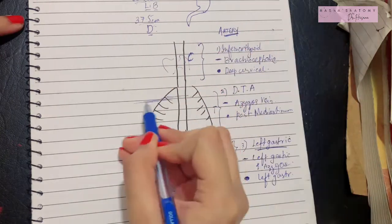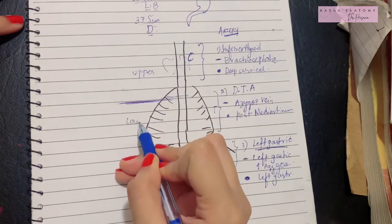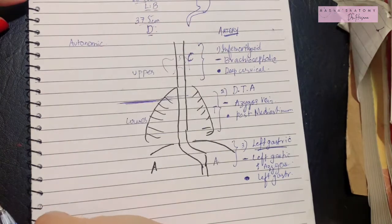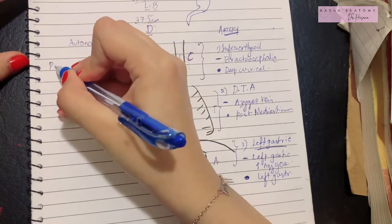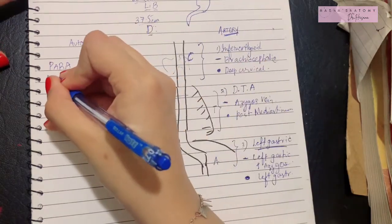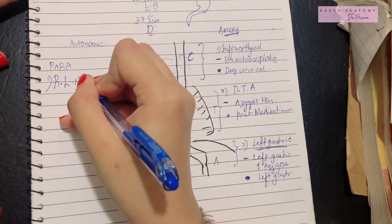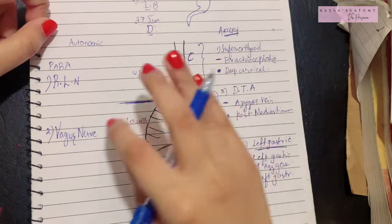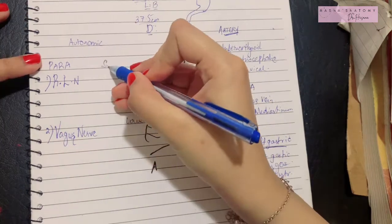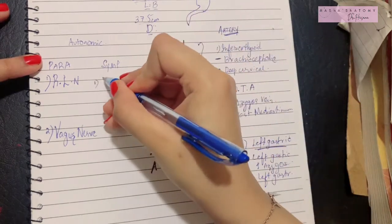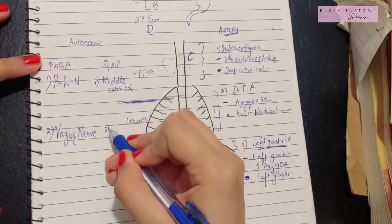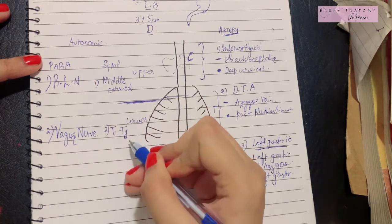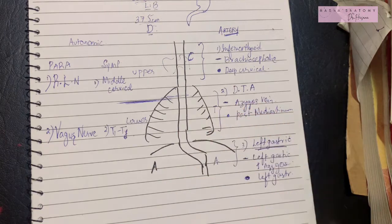Now let's talk about the nerve supply of the esophagus. The esophagus is a visceral organ and derives its nerve supply only from the autonomic nerves — sympathetic and parasympathetic. For parasympathetic supply: the upper half is supplied by the recurrent laryngeal nerve, and the lower half by the vagus nerves, which at the lower end form the anterior and posterior gastric nerves. For sympathetic supply: the upper half is derived from the middle cervical ganglion, and the lower half from T1 to T4 thoracic sympathetic ganglia, via the esophageal plexus.